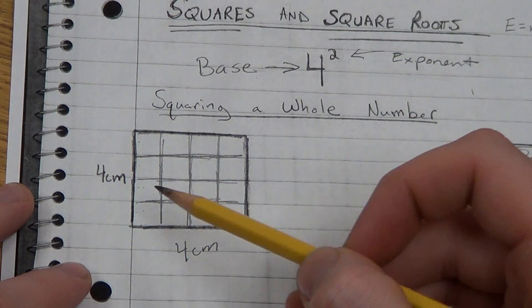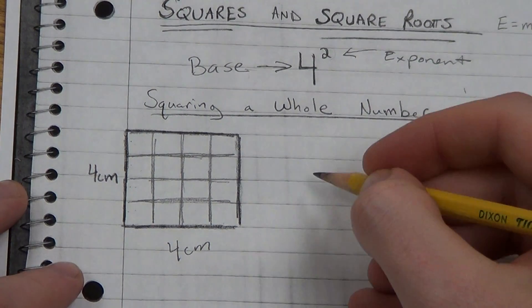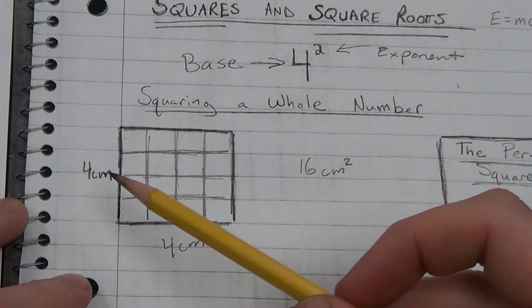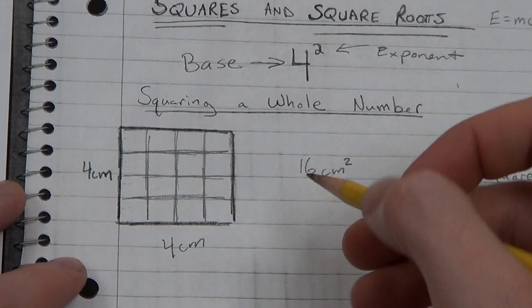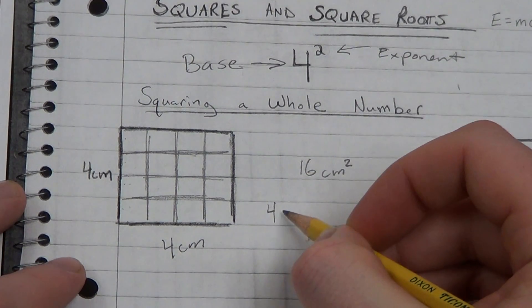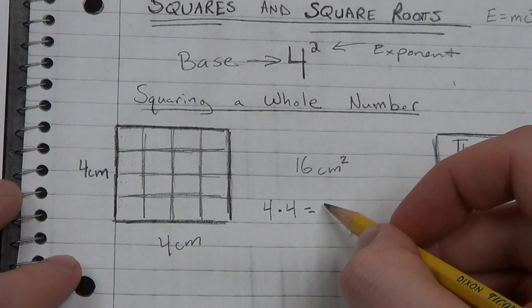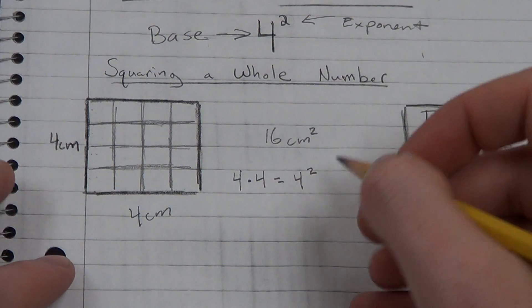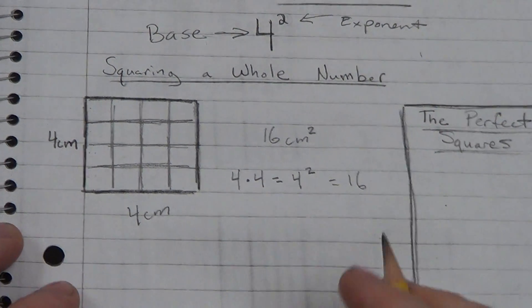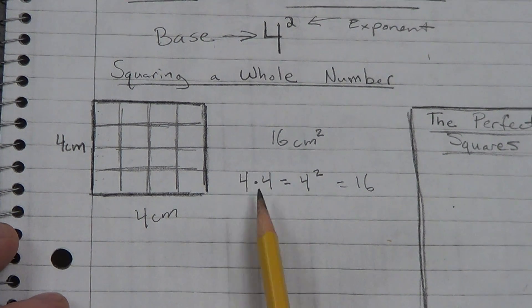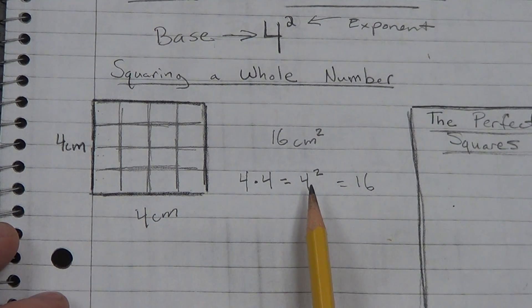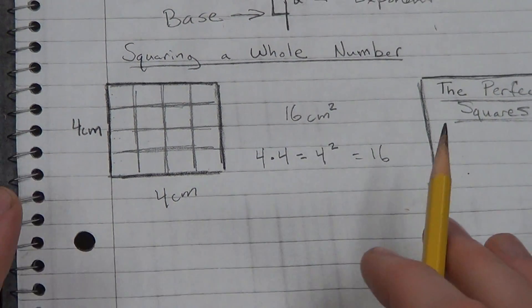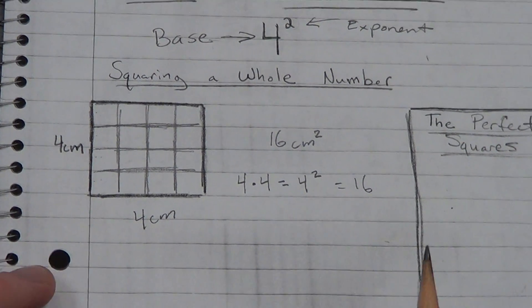The area is the combined total of all the inside squares. If you count them, 4, 8, 12, 16, there are 16 square units or square centimeters. Now 4 times 4 equals 16, and we can represent 4 times 4 as 4 squared. 4 to the second power, which equals 16.